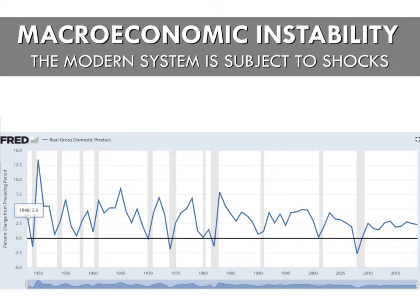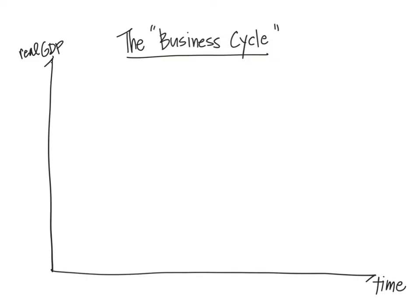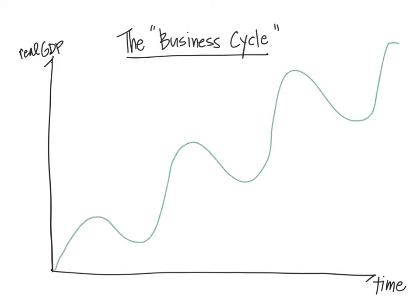Since the 1940s, the U.S. government has agreed to do its best to maintain low unemployment, stable prices, and a growing GDP. If we were to graph real GDP over time, we'd see that there are ups and downs — and we call this the business cycle.